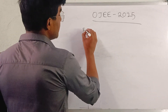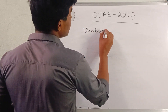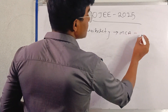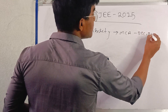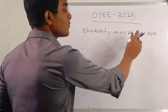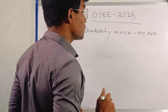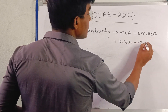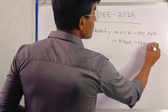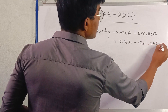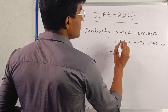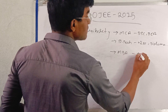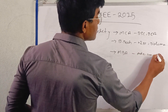Let's discuss the eligibility criteria step by step. Eligibility criteria for MCA: BSc and BCA are eligible. Apart from that, Diploma and Polytechnic lateral entry candidates are also eligible. In the third category, B.Tech and MBA students can apply — MBA includes all Art students, Commerce students, and Science students as well.